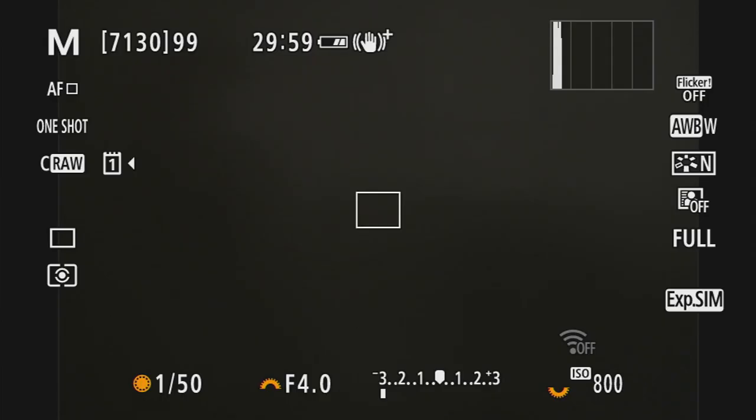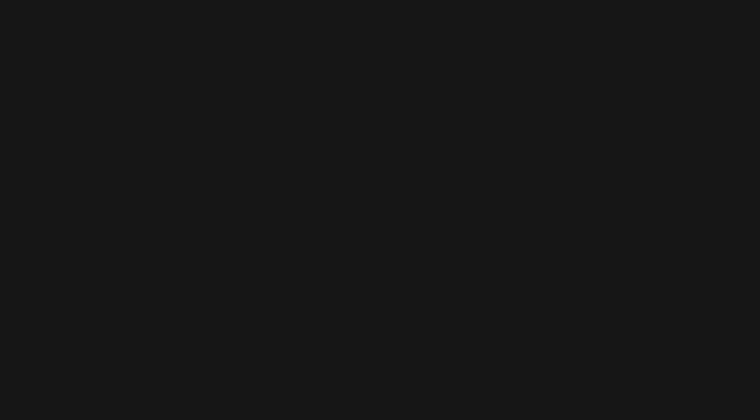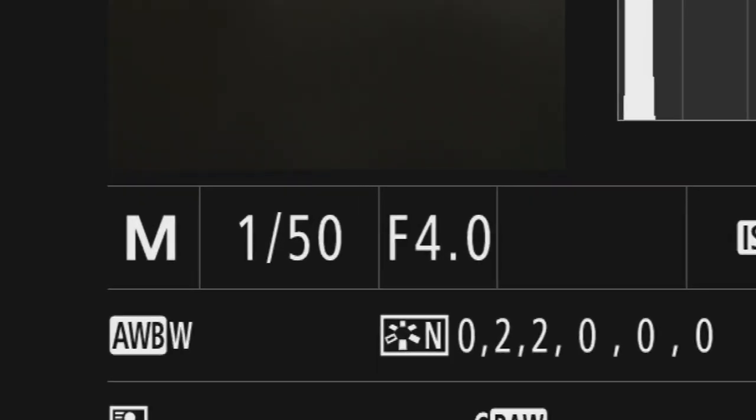Now, one place where the R5C differs from the regular Canon photo cameras is that while it has a ton of information about white balance when you're recording, none of that is available in the media playback menu. So at least none that I've been able to find. So where if you go to image review on your R5, you'll see the white balance mode that that image was shot in, on the R5C, that information just isn't there.